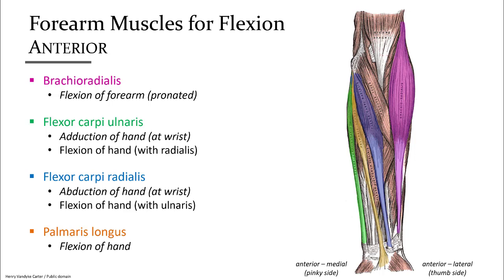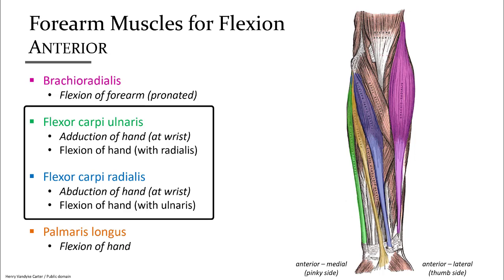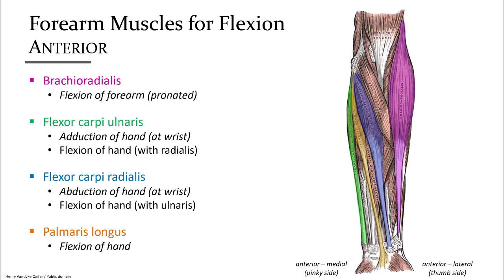The brachioradialis in pink is the only one on this list that crosses the elbow joint. It helps the brachialis flex the forearm in the pronated position, and you can feel it as your most lateral forearm muscle when in anatomical position. The next two flexor muscles attach at the wrist, which is why their name includes carpi. Flexor carpi ulnaris in green goes along the medial forearm to the wrist; alone, it will adduct the wrist. Flexor carpi radialis in blue attaches to the wrist distal to the radius; alone, it will abduct the wrist. Both together cause flexion of the hand at the wrist.